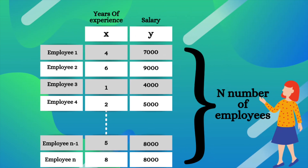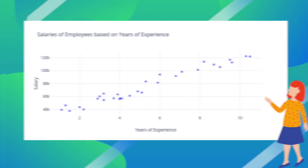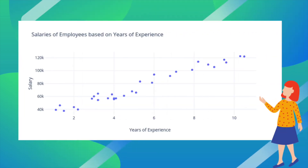So this is the following data we have. We have data from n number of employees, and as you can see the x column contains all the number of years of experience each employee has and the y column contains the salary of each employee. And if you were to plot all these points on a graph you would probably get something like this.